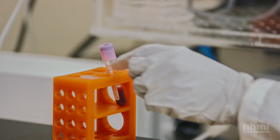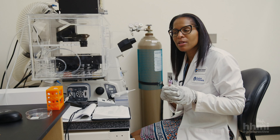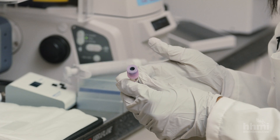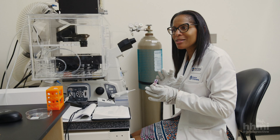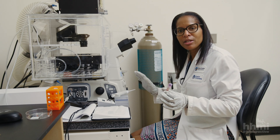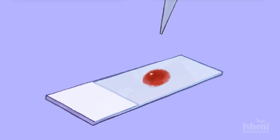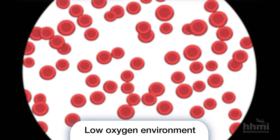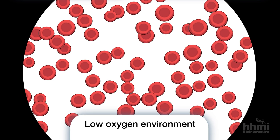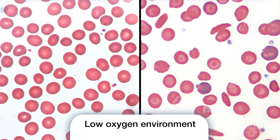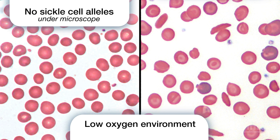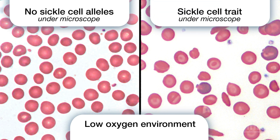Here's the blood of a patient with sickle cell trait — they have only one sickle cell allele copy. If you look at this patient's blood under the microscope, it looks completely normal under normal conditions. Researchers can mix a chemical agent into that drop of blood, which creates a low oxygen environment. After a few hours, the red blood cells start to sickle, allowing researchers to distinguish between someone with no sickle cell alleles and someone with sickle cell trait.